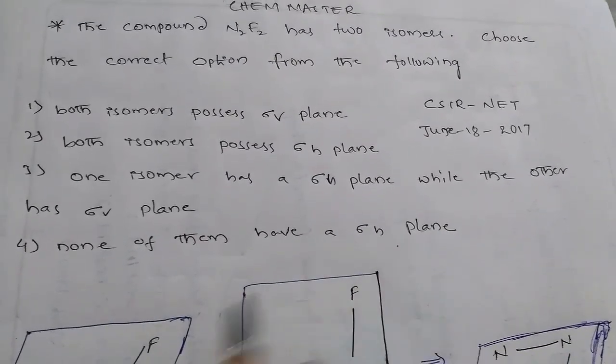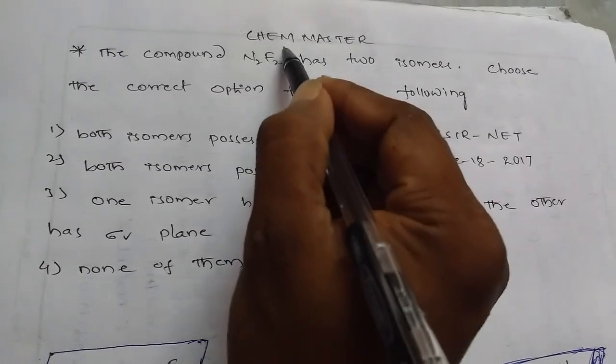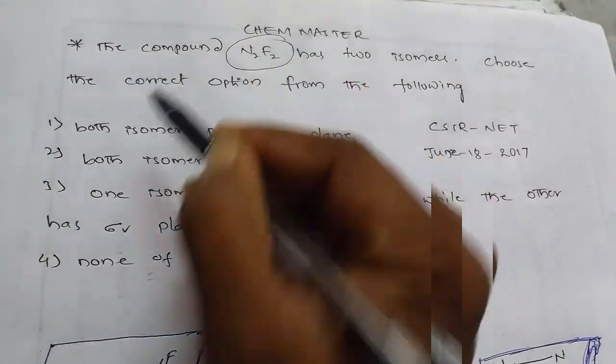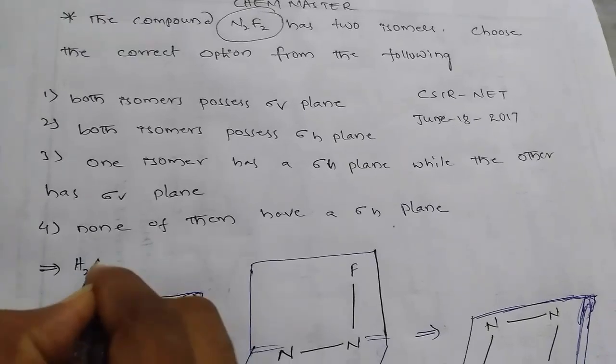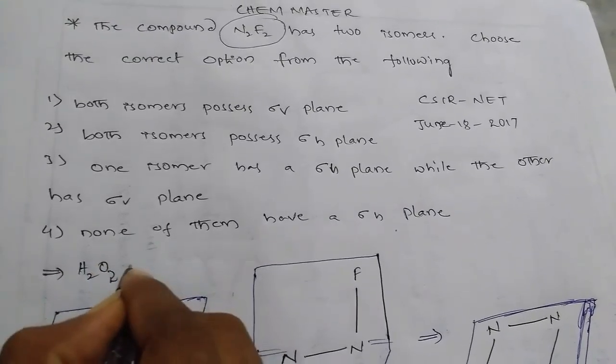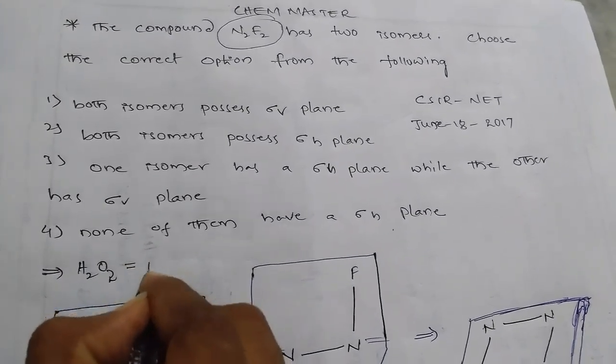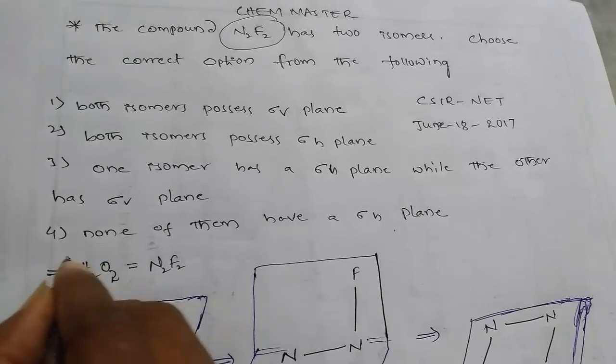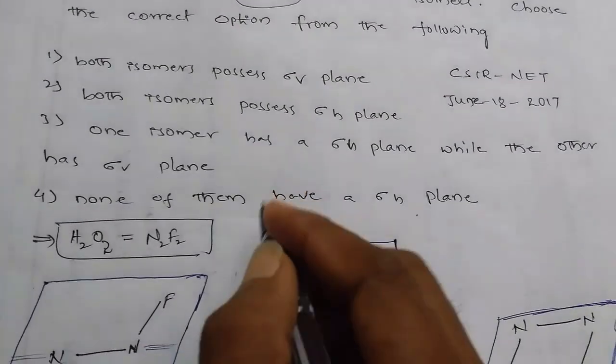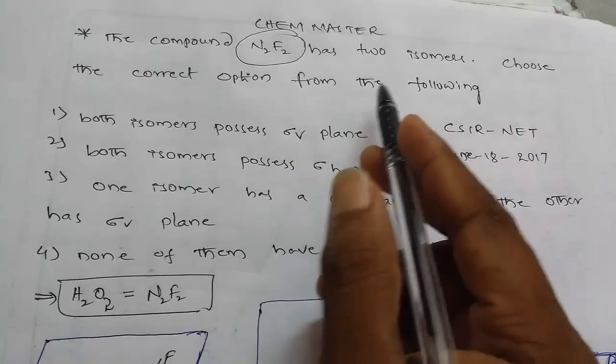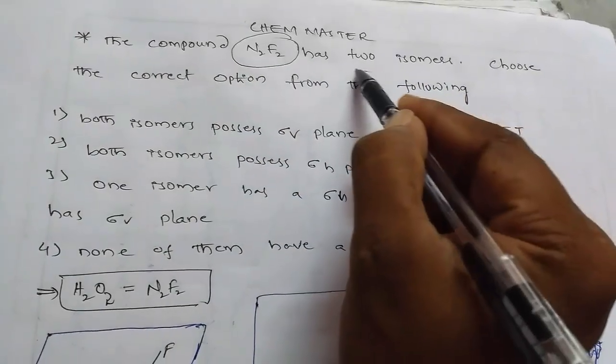So here, this N2F2 has a structure that resembles H2O2, hydrogen peroxide. And if you observe, we have in the question this compound has two isomers.